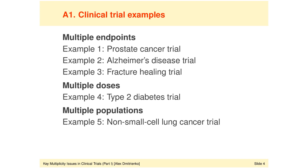The first group of clinical trial examples deals with the case of multiple endpoints, and there are three examples in this group. Even though all three examples deal with multiple endpoints, they represent three different types of multiple endpoint problems, because the trial sponsor actually pursues three different inferential goals in those three settings.